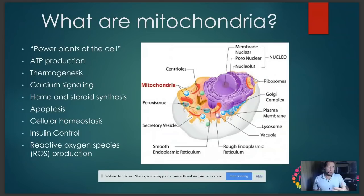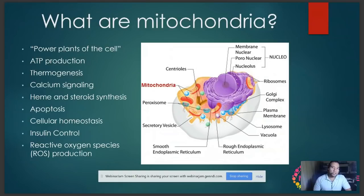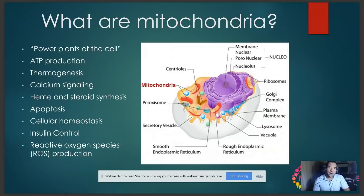Mitochondria control the production of cholesterol, which then controls steroid hormones. Apoptosis — programmed cell death — is controlled by the mitochondria. Without appropriate apoptosis control, you end up with immortal cells, which are cancer cells. General cellular homeostasis, including the amount of substrate coming in and the amount of energy going out, is also a key function. Another really important one is insulin control.